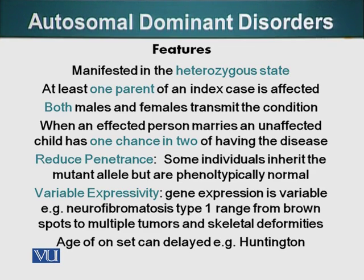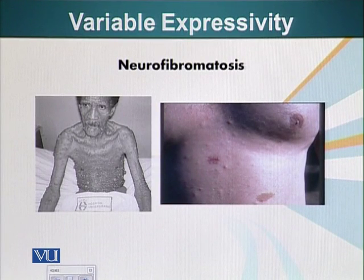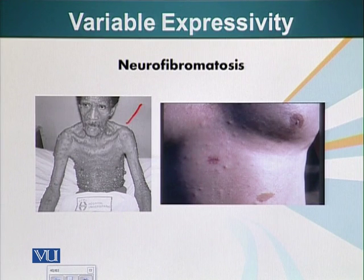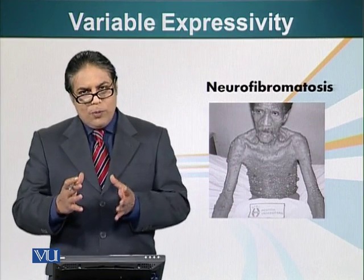Variable expressivity: in certain autosomal dominant diseases, although an individual has the gene for that particular disease, the symptoms could be very mild, while another person with the same genotype shows very drastic symptoms. For example, here is a photograph of two people suffering from the same autosomal dominant disorder called neurofibromatosis. One patient has large nodules on his skin, while the other patient has only café-au-lait spots — dark pigment spots. 'Café-au-lait' is French for coffee with chocolate. There is a big difference in phenotype between these two individuals, although they may have the same mutation.